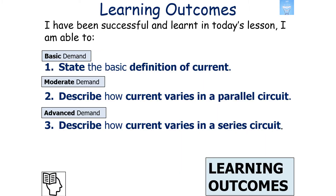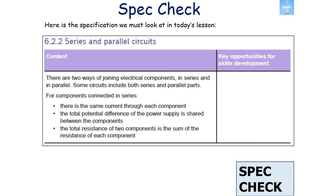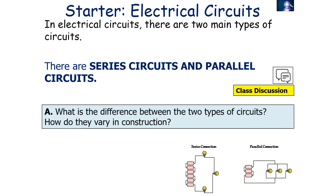If we've been successful and learned in today's lesson, we should be able to state the basic definition of current, describe how current varies in a parallel circuit, and describe how current varies in a series circuit. This links into GCSE Combined Science Physics specification 6.2.2, series and parallel circuits.